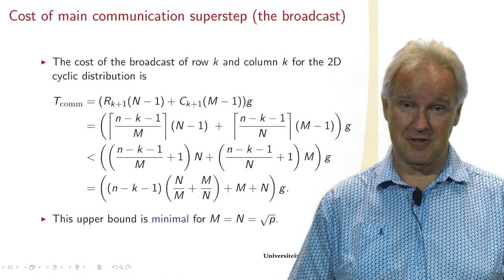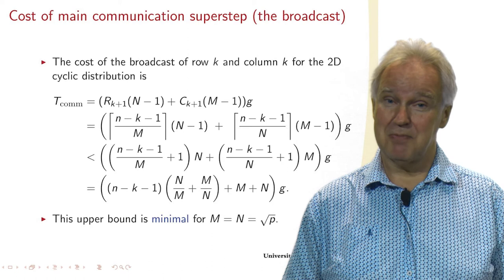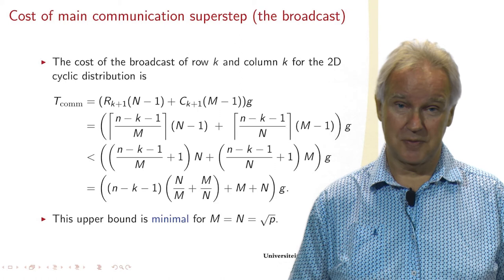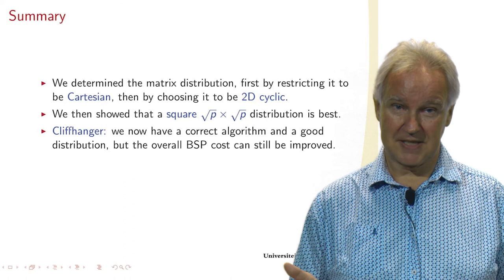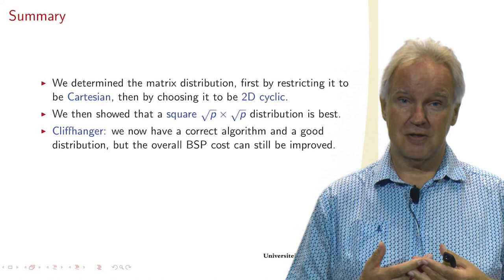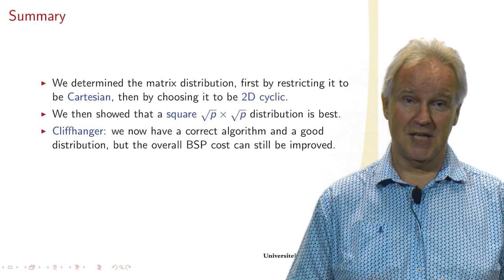So we are happy in this case because communication is minimized also in the case of a square distribution. So what did we do? Looking back at the design of our algorithm, we first chose a data distribution. We chose it Cartesian to limit the communication.